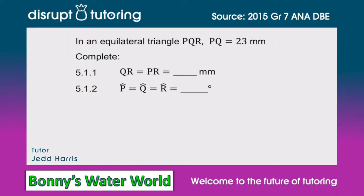Hey guys, you're speaking to Jed from Disrupt Tutoring — it's always such a pleasure to join you. Today we're going to look at an equilateral triangle PQR, and the length of one side is 23 millimeters.